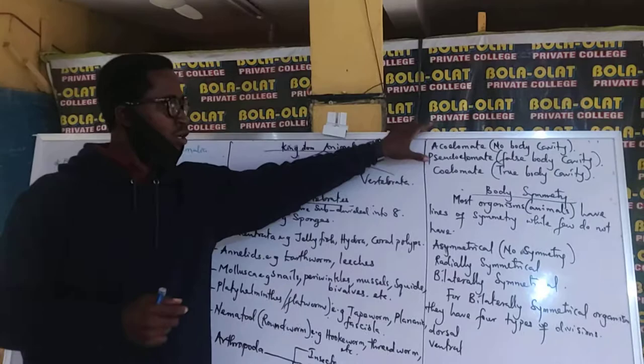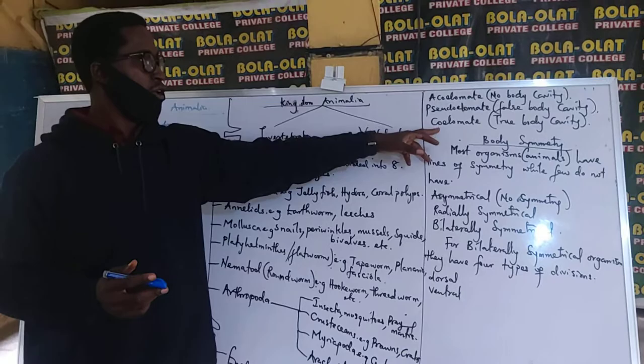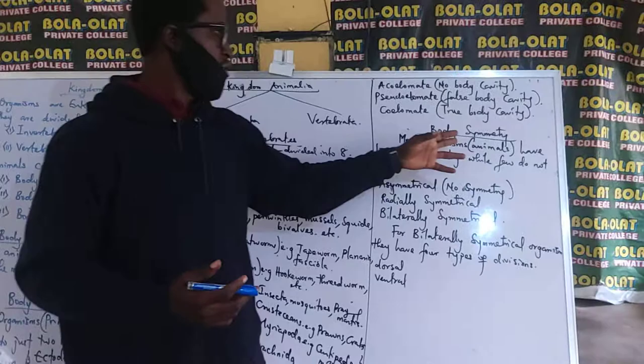Acoelomates are called no body cavity. Pseudocoelomates — we call them false body cavity, like the amoeba. And the coelomates, like humans, have a true body cavity.